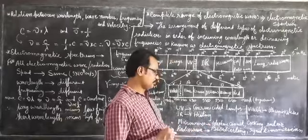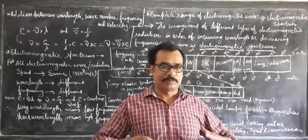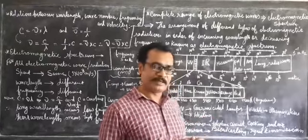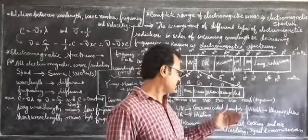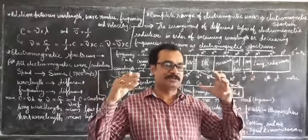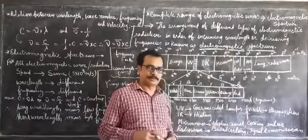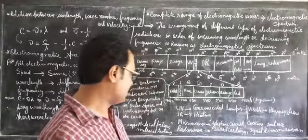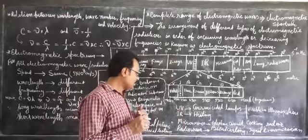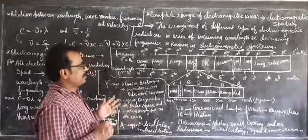Radio waves are used for broadcasting — for TV and radio signal transmission to large numbers of people across an entire country. It is a one-way communication. Microwaves, by contrast, have two-way communication.